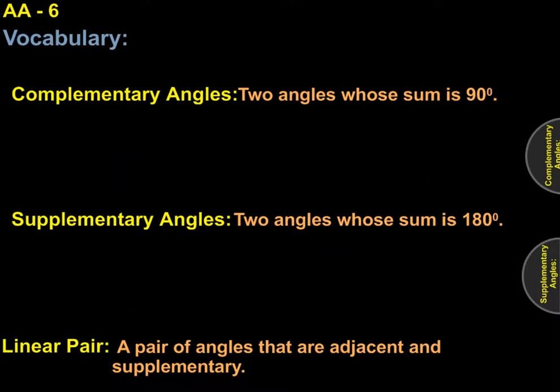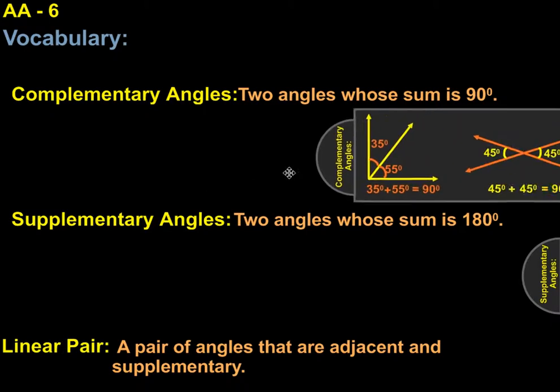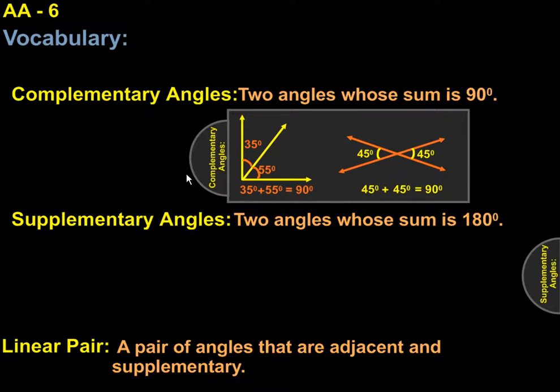We'll start by looking at some vocabulary. Complementary angles are two angles whose sum is 90 degrees. And here's some examples of complementary angles.